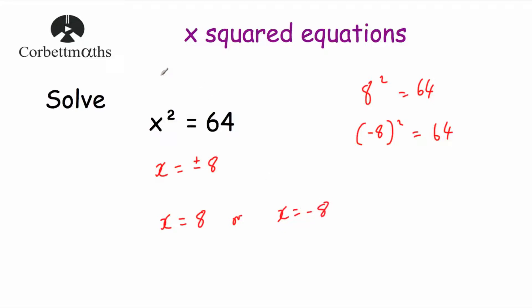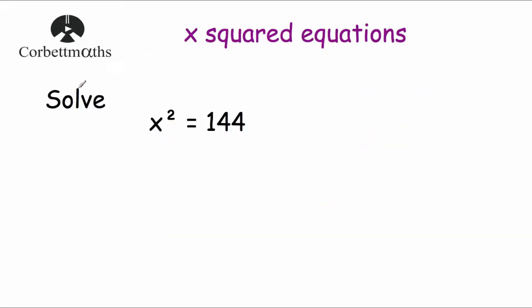Those are the solutions for that equation. Our next question says: solve x squared equals 144. The square root of 144 is 12, so x equals 12. But also remember it could equal negative 12 as well, because negative 12 times negative 12 is also equal to 144.